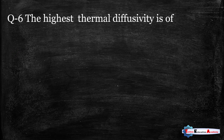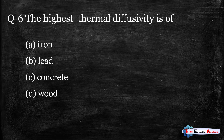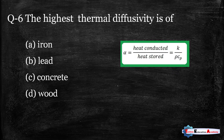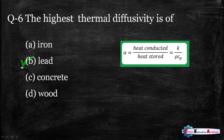Question number six: The highest thermal diffusivity is of — option A iron, option B lead, option C concrete, option D wood. We can evaluate k/(ρc) for each material. Knowing the density and thermal conductivity of these materials, the highest thermal diffusivity among the given options is lead. So the correct answer is lead.